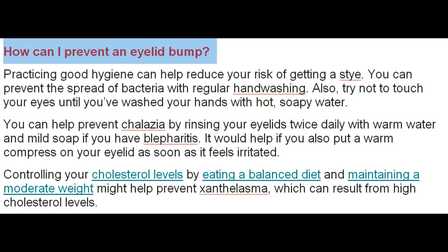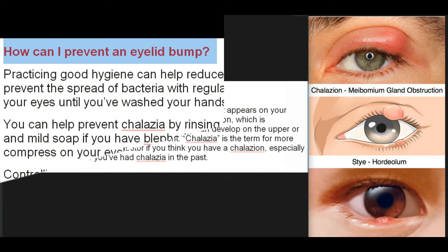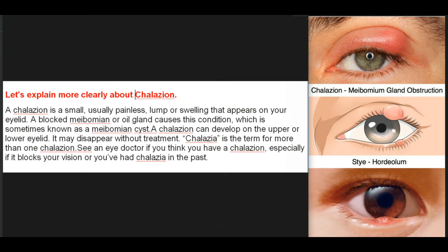Controlling your cholesterol levels by eating a balanced diet and maintaining a moderate weight might help prevent xanthelasma, which can result from high cholesterol levels. Now, let's explain more clearly about chalazion. A chalazion is a small, usually painless lump or swelling that appears on your eyelid. A blocked meibomian or oil gland causes this condition, sometimes known as a meibomian cyst. A chalazion can develop on the upper or lower eyelid and may disappear without treatment.